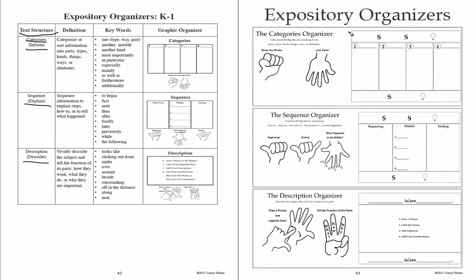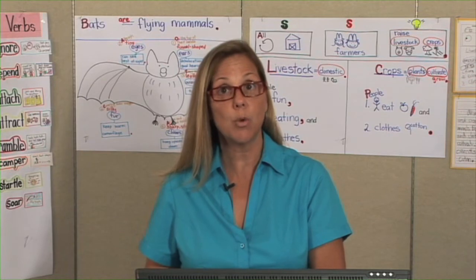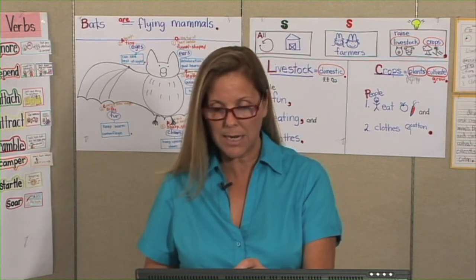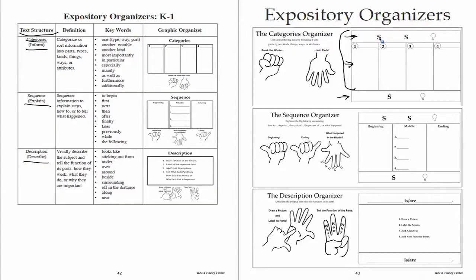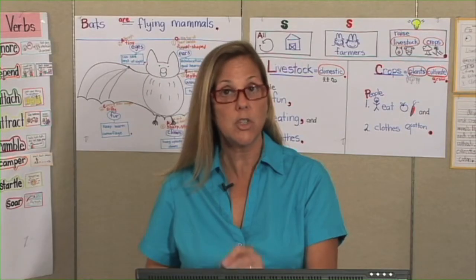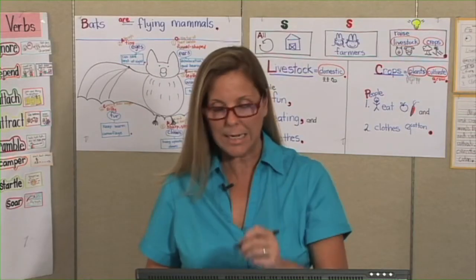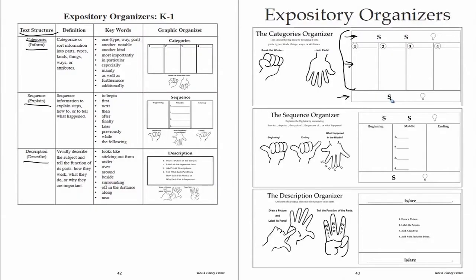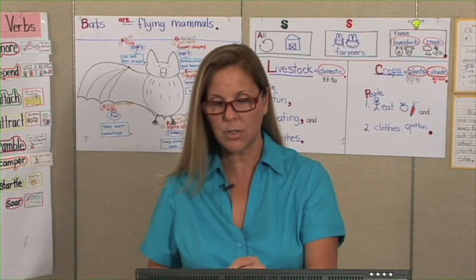With lecture notes, you're only doing the big idea and the details. On the bottom here is the conclusion — the secret formula. Repeat the big idea, SS light bulb, but use different words. This part we're not going to worry about when we do lecture notes, but just so you know: S is subject, and the light bulb is the big idea.